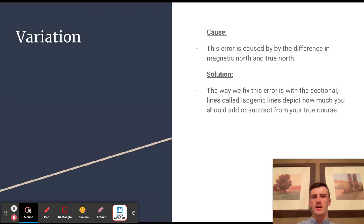Variation, the first error, is caused by the difference in Magnetic North and True North. When you do your flight plan, you want to know the difference between Magnetic North and True North because they are not the same.